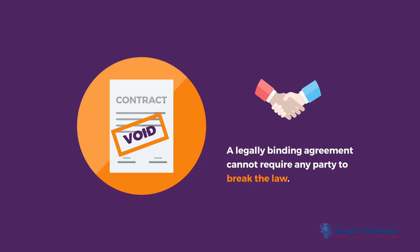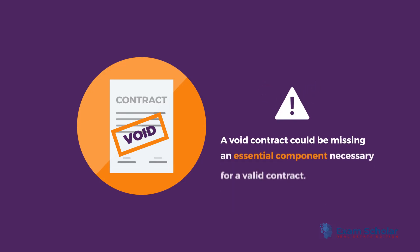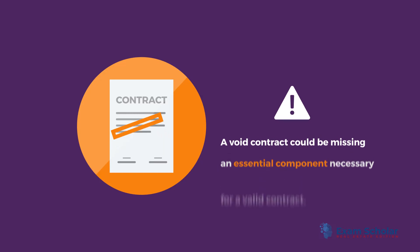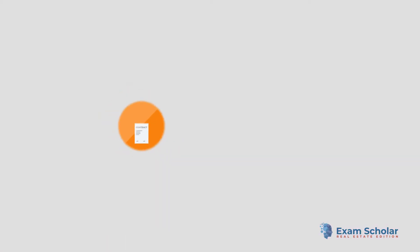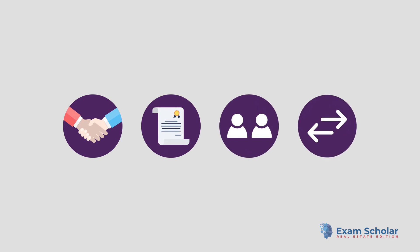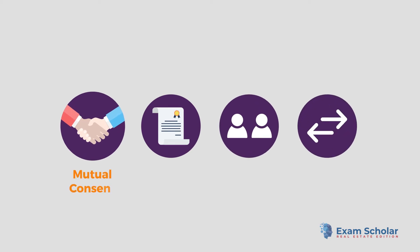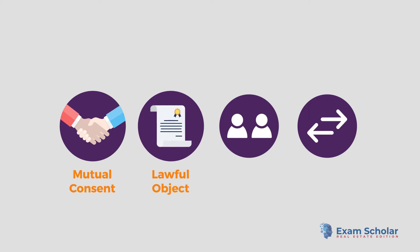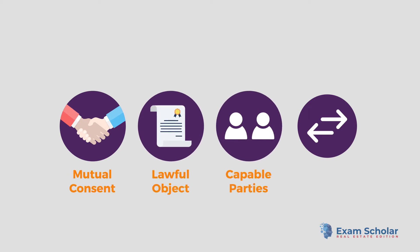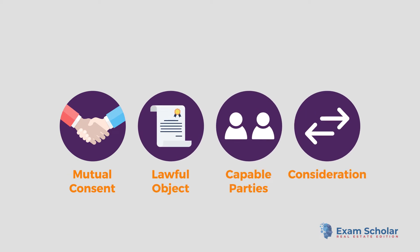Alternatively, a void contract could be missing an essential component necessary for a valid contract. There are four key elements that are the bare minimum required for a valid contract: mutual consent, lawful object, capable parties, and consideration.